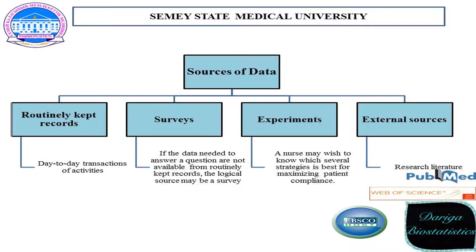The second source is surveys. If the data needed to answer questions are not available from routinely kept records, the logical source may be a survey. For example, you observe from routinely kept records that incidence of cervix cancer this year is higher than last year – it has increased by 20%. The next step should be a survey, such as a questionnaire or interviews, to define the reason for the growth of cervix cancer cases.